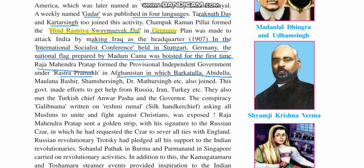Raja Mahendra Pratap formed the Provisional Independent Government under the Rashtra Pramukh in Afghanistan, in which Barakatullah, Ubaidullah, Maulana Bashir, and Shamshir Singh were among the leaders who joined him. He formed a provisional — that is, a temporary — government in that region.